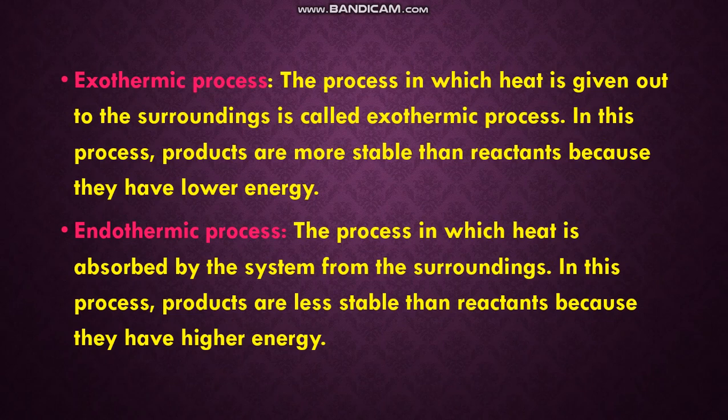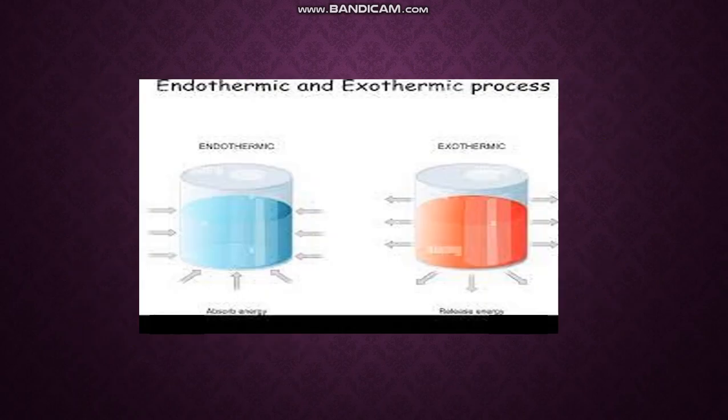In an endothermic process, the products are less stable than reactants because they have higher energy. This can be represented in a diagram — endothermic absorbs energy, exothermic releases energy. These are some of the basic terms in chemical engineering thermodynamics.